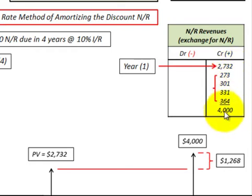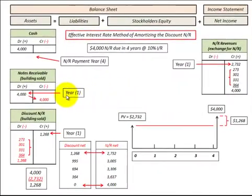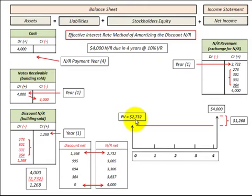You add those together and you get $4,000 in notes receivable revenues, which balances with the notes receivable of $4,000. This interest revenue was a result of the $4,000 revenue or payment that we received at the end of the fourth year and the difference here to $2,732. So we take the difference between those two amounts and we get $1,268, which is the interest earned on this notes receivable that we have to allocate to the revenues earned.